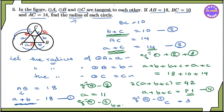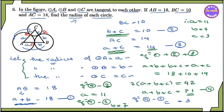Therefore, the radius of circle A is equal to 11, the radius of circle B is equal to 7, and the radius of circle C is equal to 3.